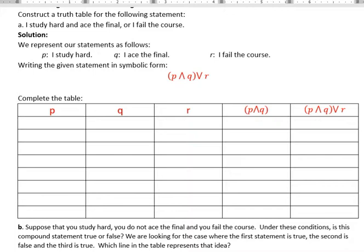And so in this example, we're saying I study hard and ace the final, or I fail the course. First, you need to represent each of the statements symbolically. So for P, I study hard, I'm calling that P. Ace the final is Q, and then R is I fail the course. Those are the three different statements that I have going on in there, and I'm going to write that in symbolic form.